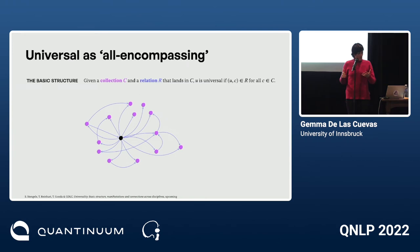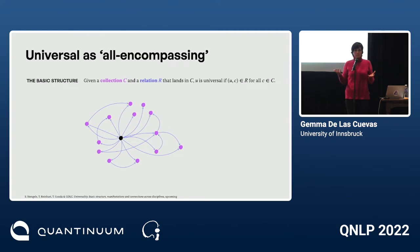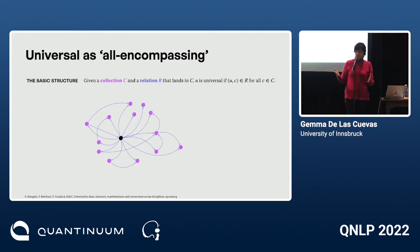Whenever you find this structure — it's a very basic structure — you can call the corresponding object U universal. I'm not asking that U be in C, that R be transitive or reflexive, or that C be finite. It's just a very basic structure. Let us see some instantiations.